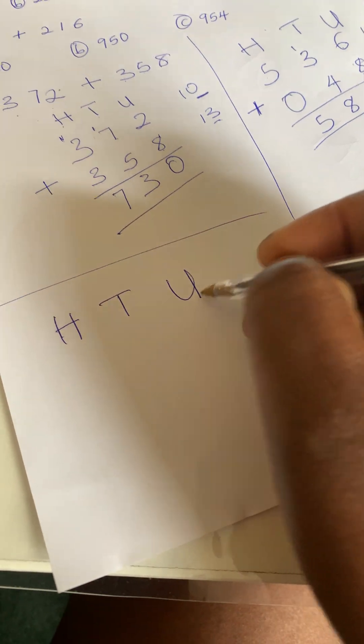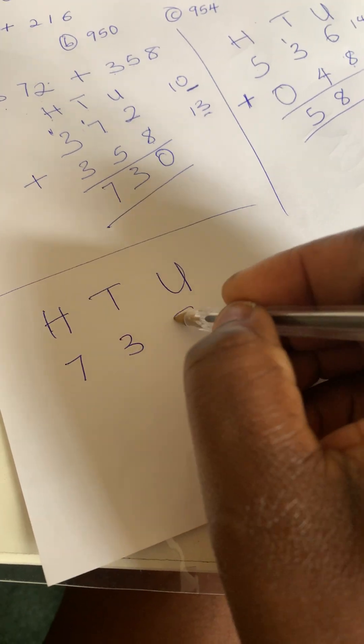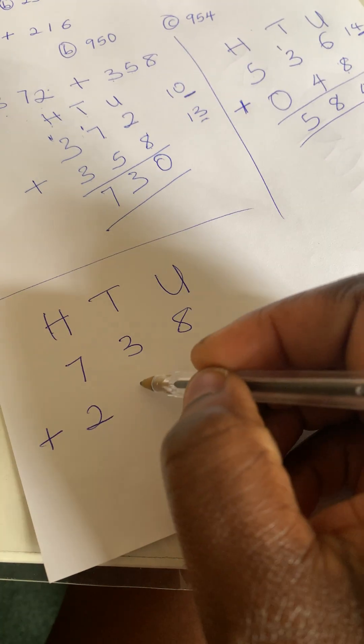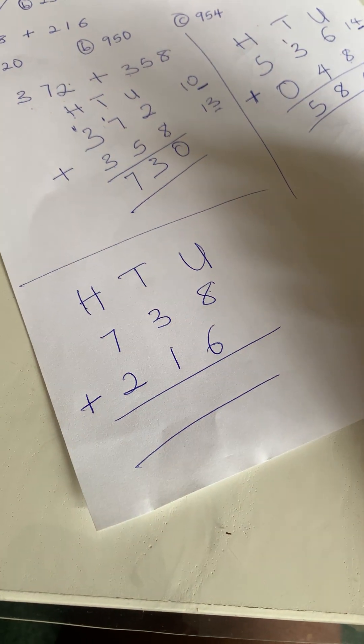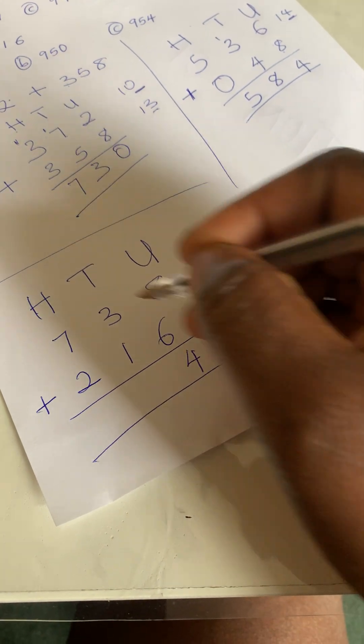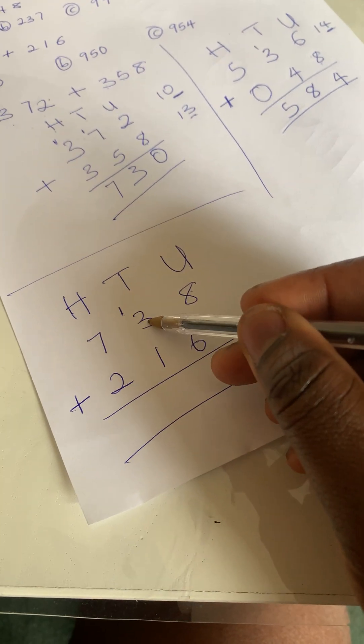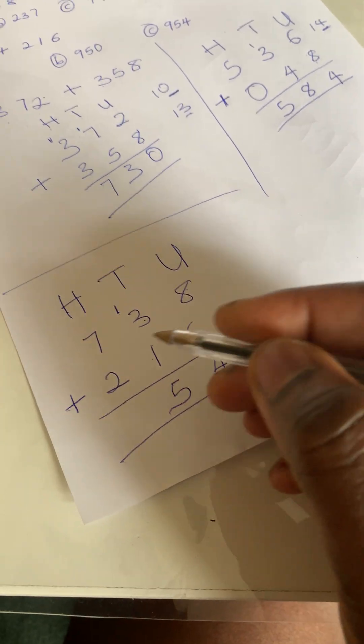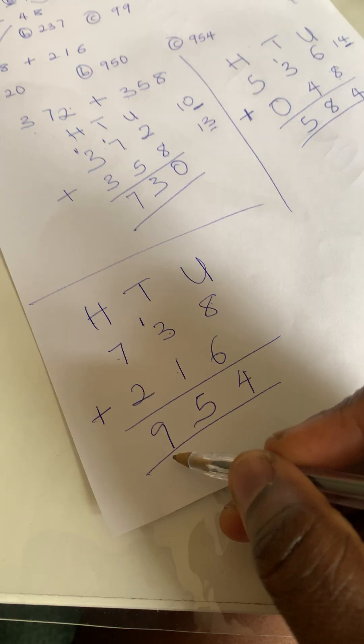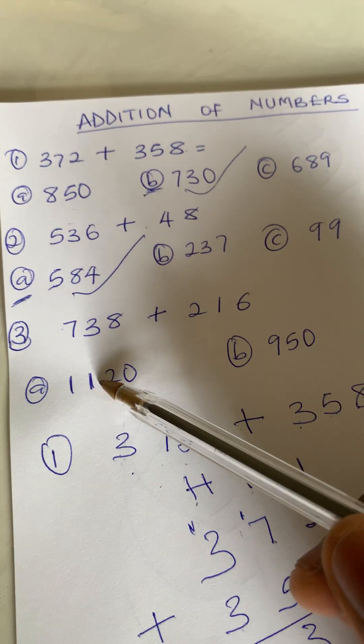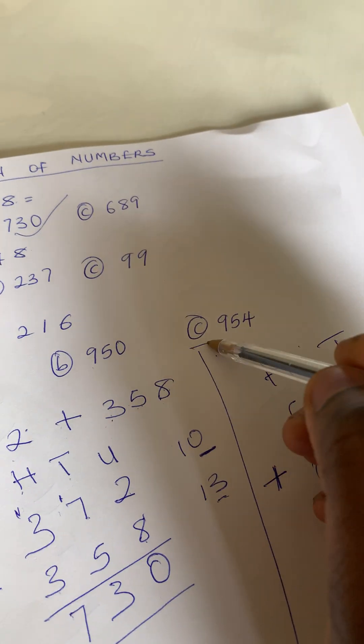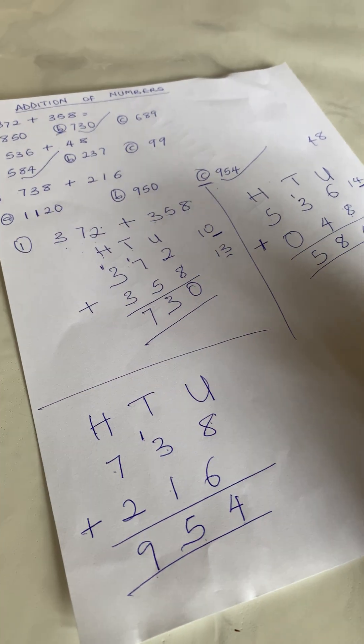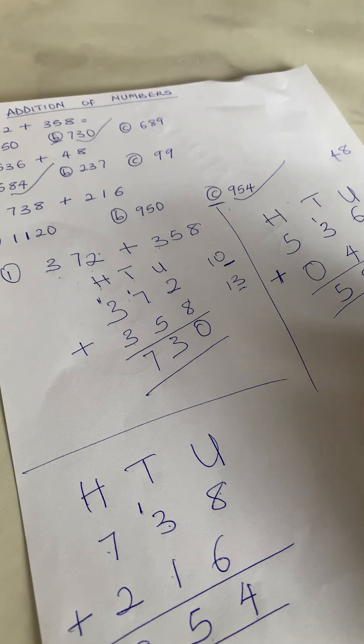The third one: we have 738 plus 216. We add up: 8 plus 6 is 14. Write 4, carry 1. 1 plus 3 is 4, plus 1 is 5. 7 plus 2 is 9. So the answer is 954. Is it in our options? a is 1120, b is 950, c is 954. This is the correct answer. You can see how easy it is using hundreds, tens, and units for three-digit numbers.